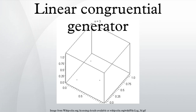A linear congruential generator is an algorithm that yields a sequence of pseudo-randomized numbers calculated with a discontinuous piecewise linear equation. The method represents one of the oldest and best-known pseudo-random number generator algorithms.